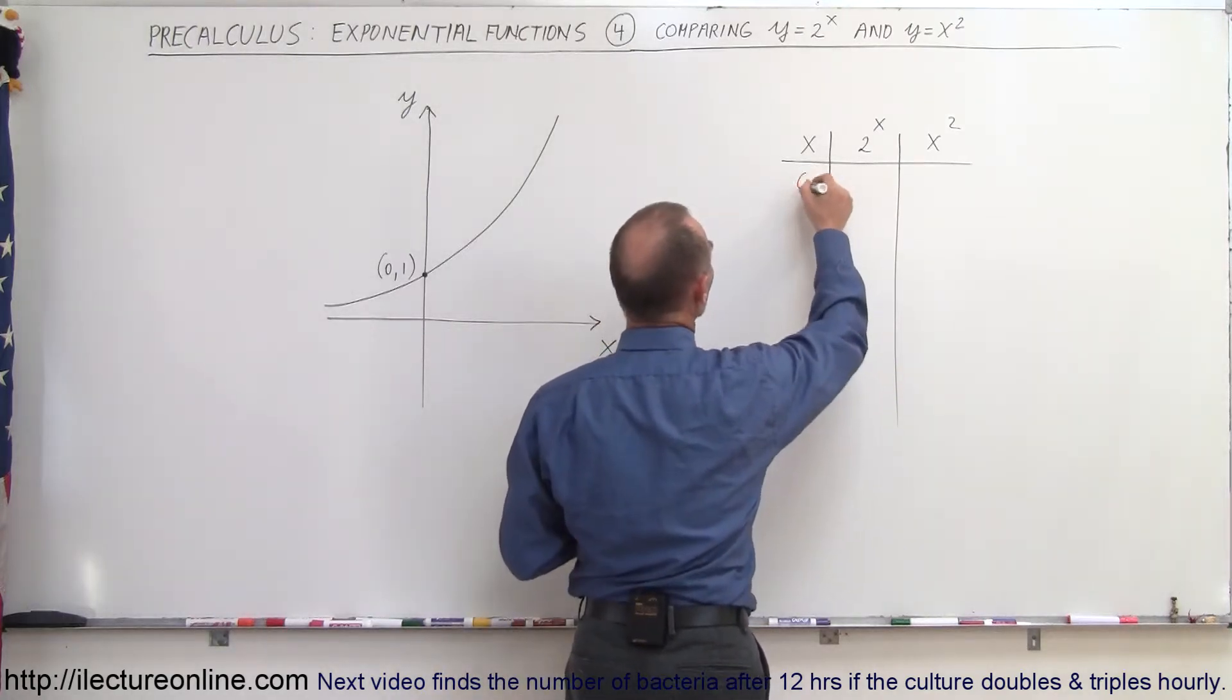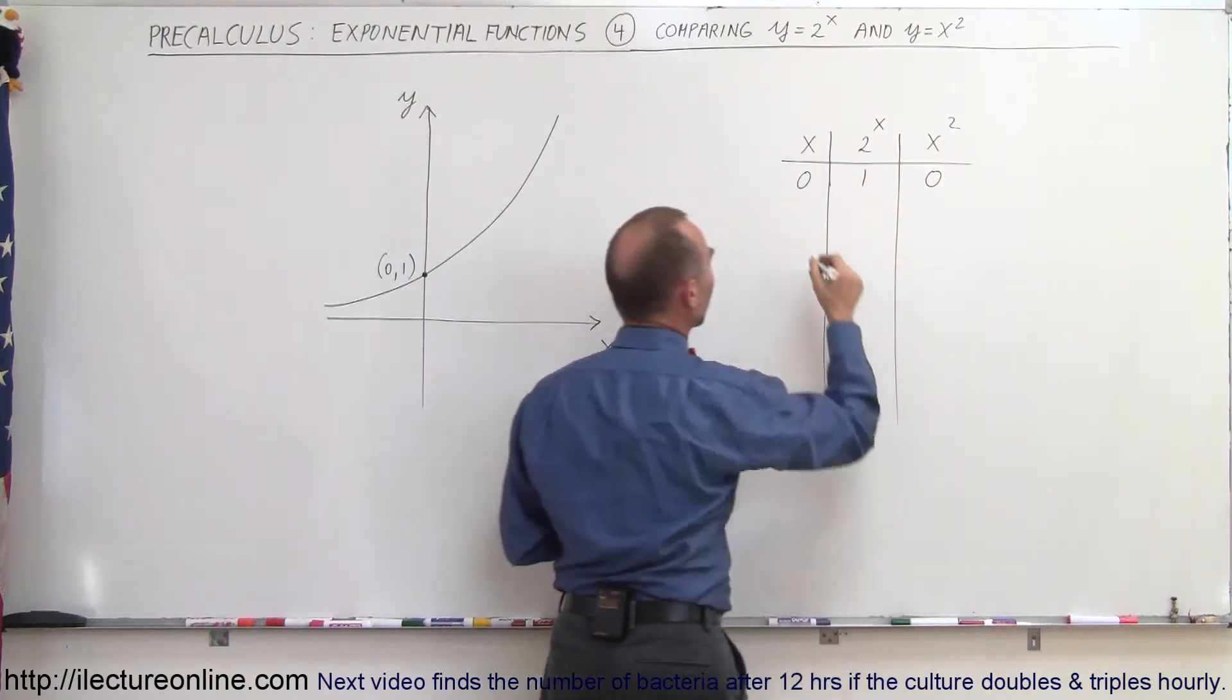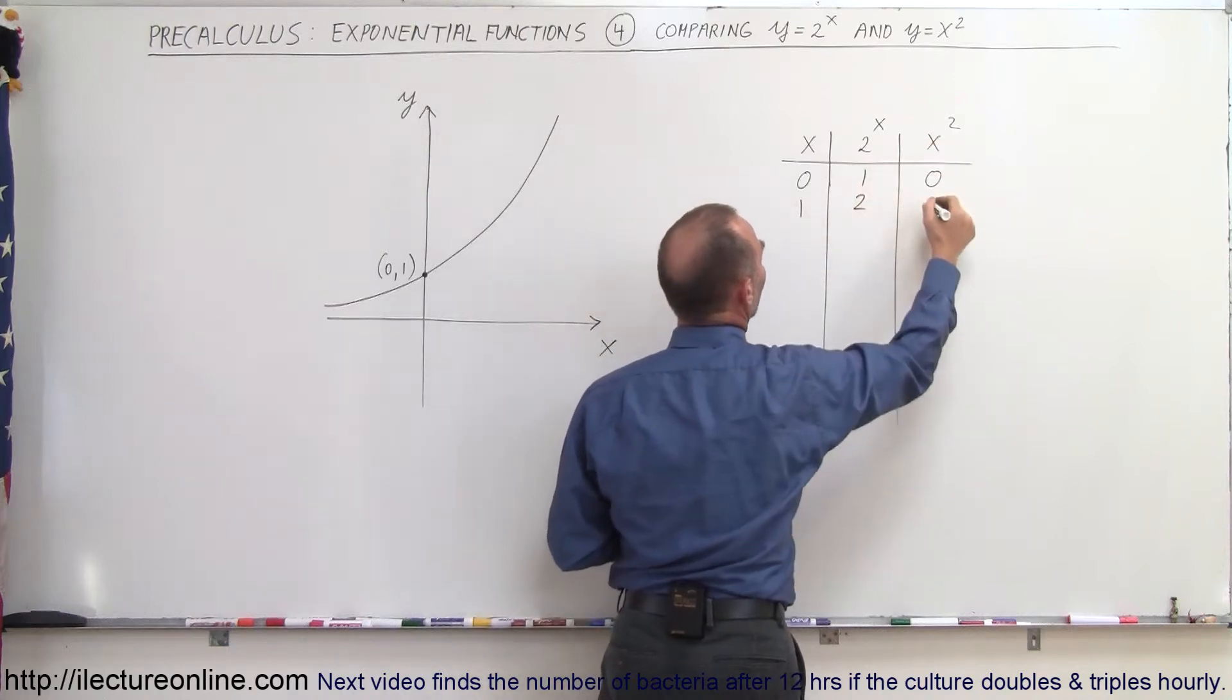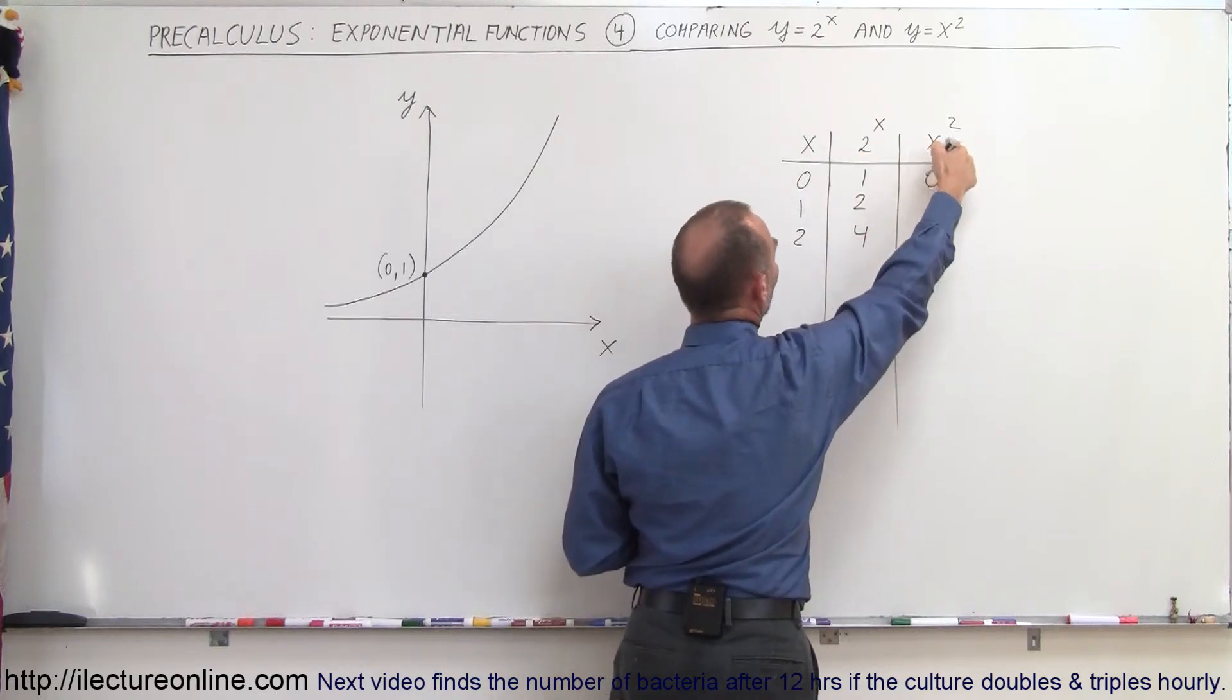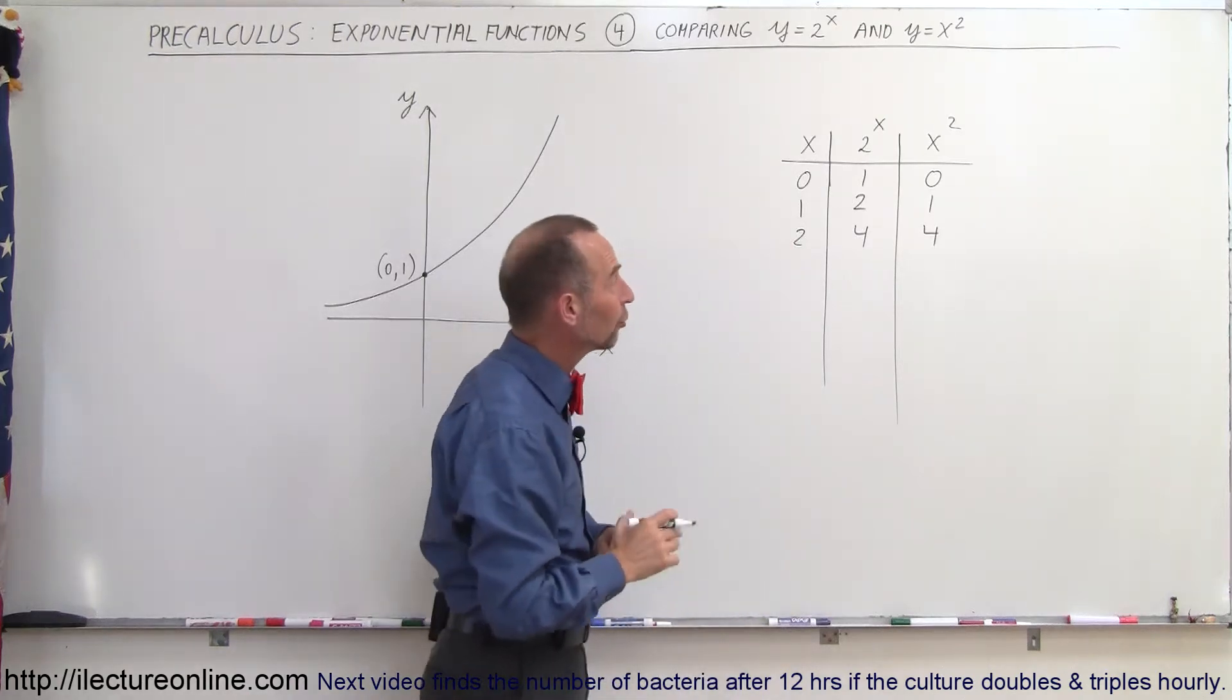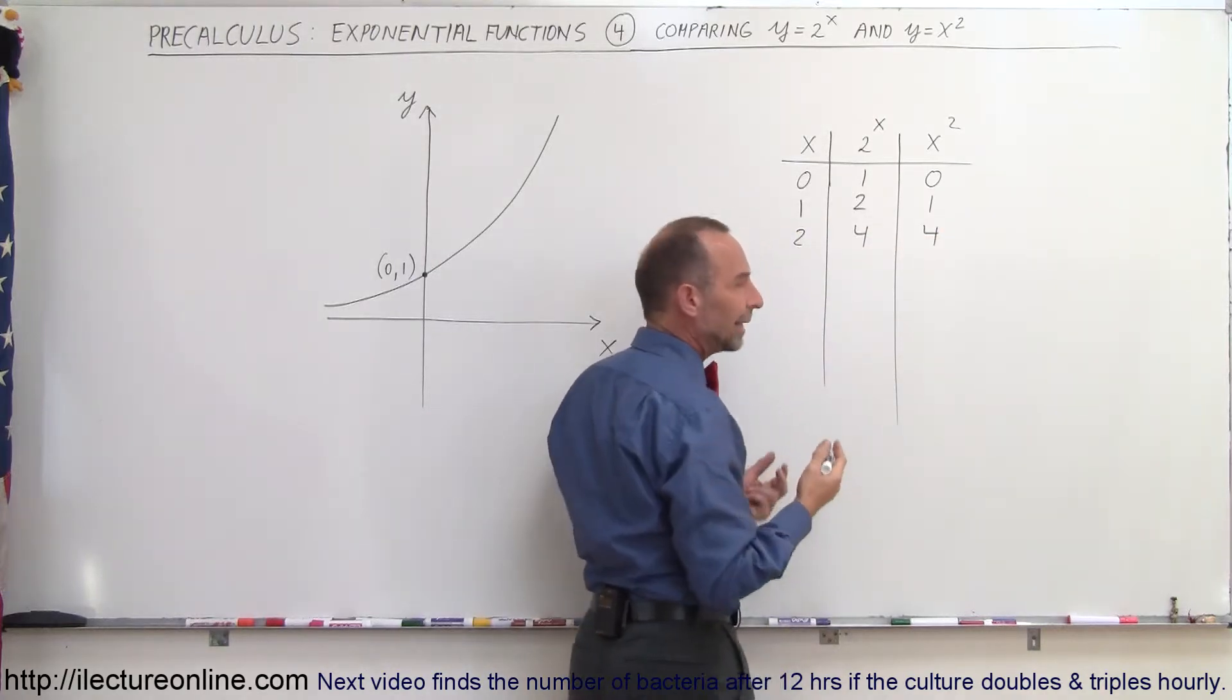When x is equal to 0, we have 2 to the 0 power is equal to 1 and 0 to the second power is equal to 0. When x is equal to 1, 2 to the first power is 2, 1 to the second power is equal to 1. When x is equal to 2, 2 squared becomes 4 and 2 squared becomes 4. So that's where the two functions are equal to one another. Notice that first the x squared function is smaller, then they become equal in size, equal in value.